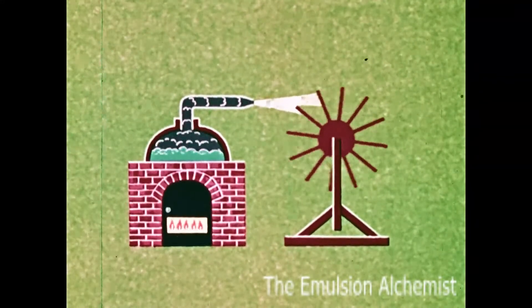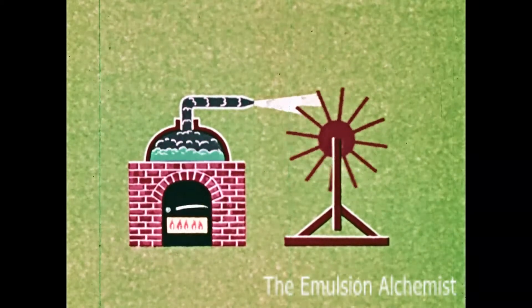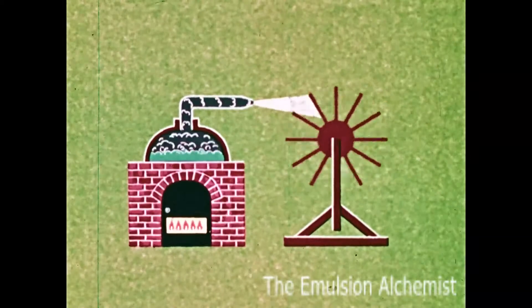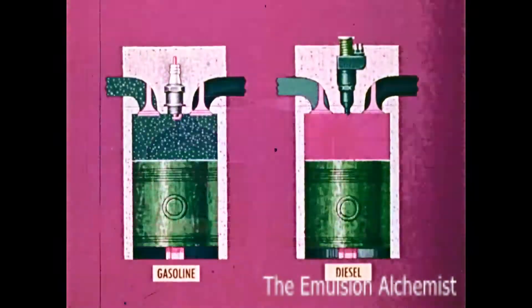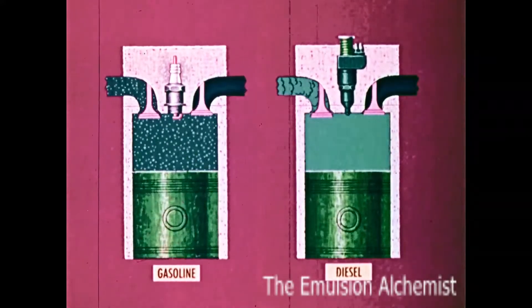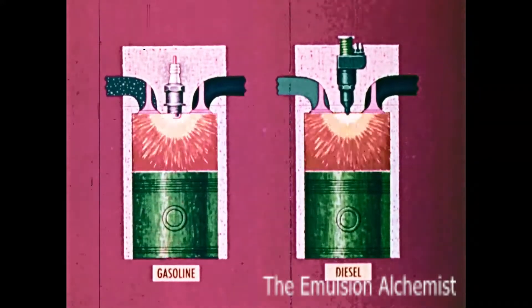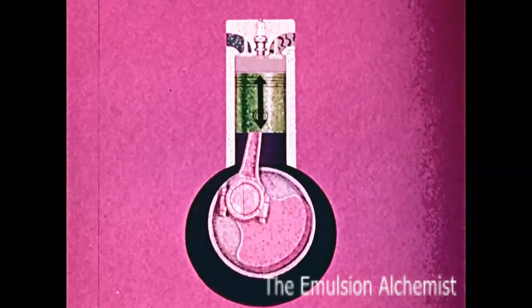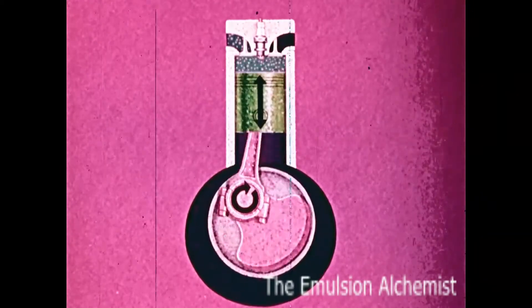This is an external combustion engine with the fuel burned outside the part where the output power is produced. Gasoline and diesel engines are internal combustion engines with the fuel burning inside. Their crank linkages convert the reciprocating piston action to rotary shaft motion.